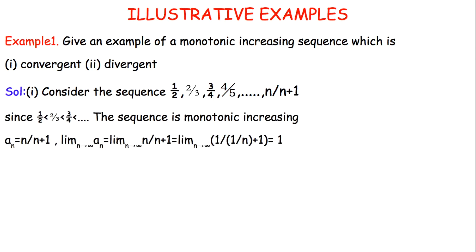It is given that the sequence is monotonically increasing. We have to determine a particular sequence which is also increasing and must be bounded to be convergent, using the theorem. So let's consider the sequence 1/2, 2/3, which is also increasing — we know 2/3 minus 1/2 is positive. In reality, 2/3 is approximately 0.66 and 1/2 is 0.5, and so on.